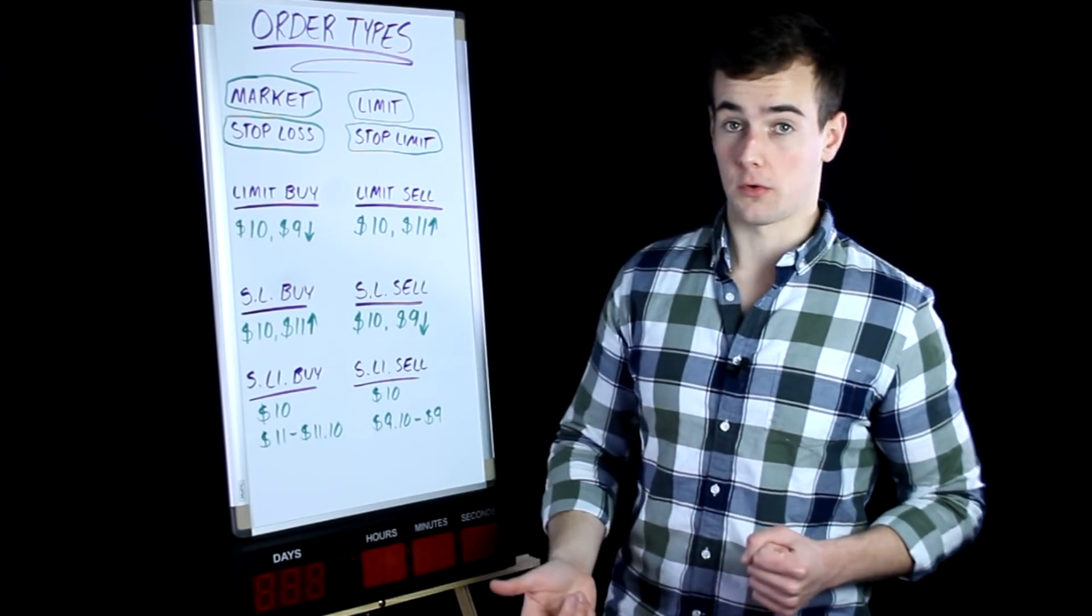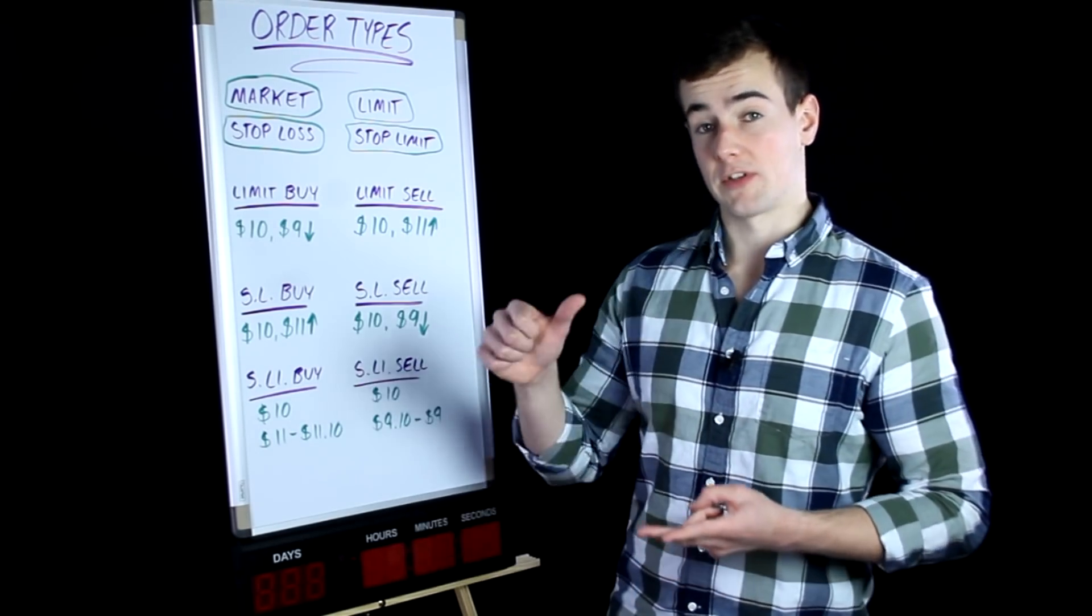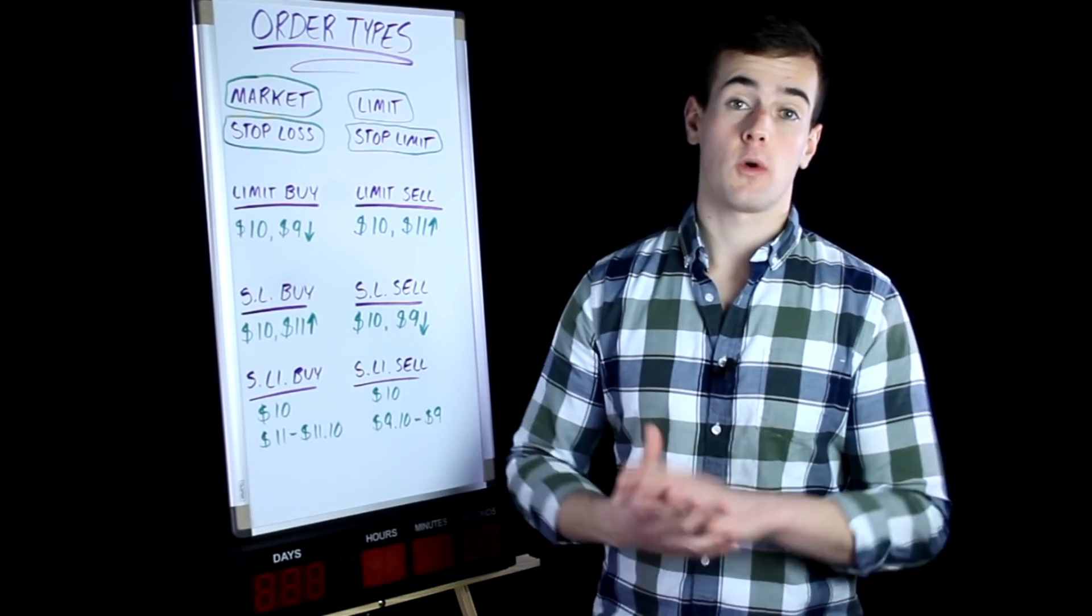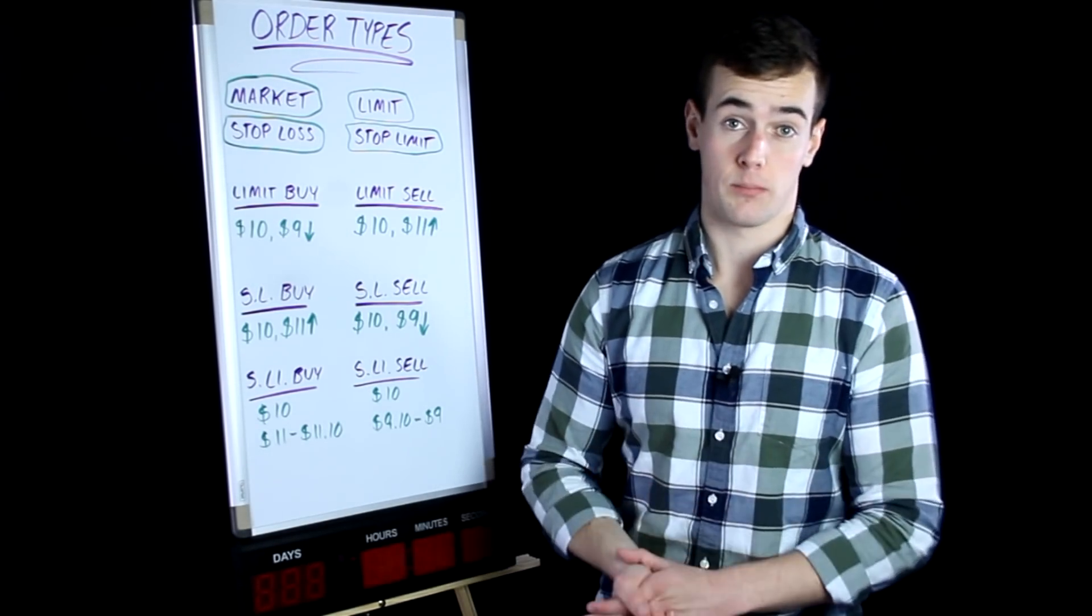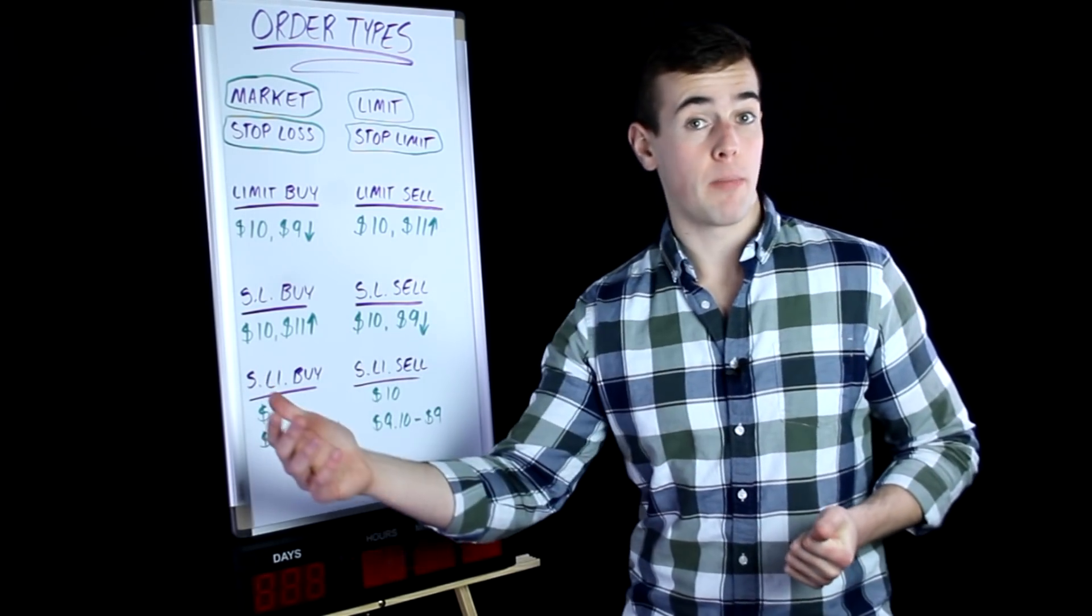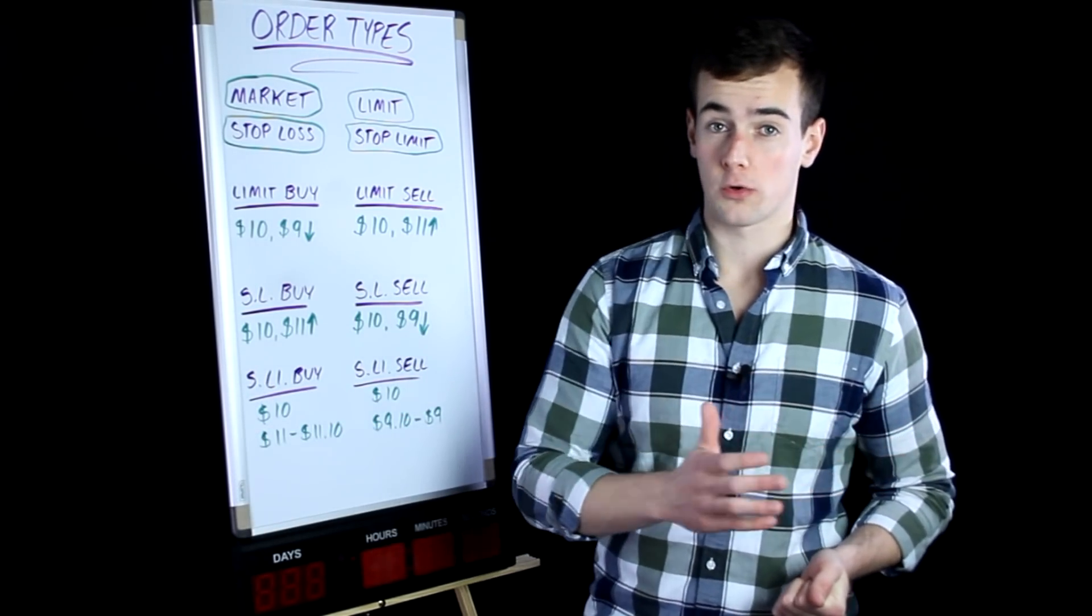So first of all, we have a market order, we have a limit order, we have a stop loss order and then a stop limit order. So a market order is the one that most people use and it is very simple. Your order is filled at the current market price.